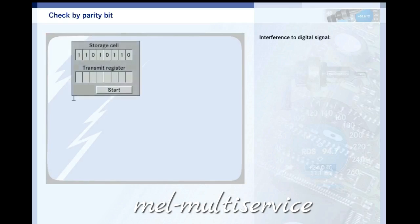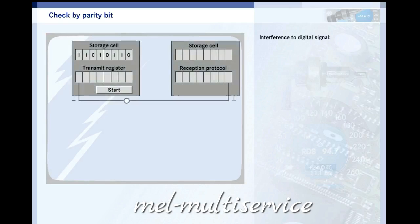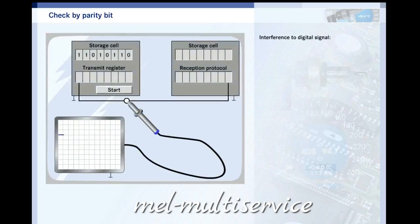What happens if there is serious interference to the digital signal between the transmitter and the receiver? Try it out. The interference has reversed a bit. A 1 has been turned into a 0. This is a serious corruption of the binary number.